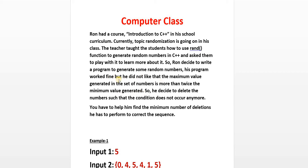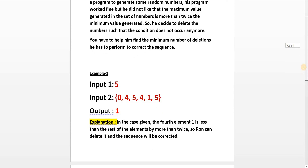So the key condition is: he did not like that the maximum value generated in the set of numbers is more than twice the minimum value generated. He decided to delete numbers such that the condition does not occur anymore. You have to help him find the minimum number of deletions.